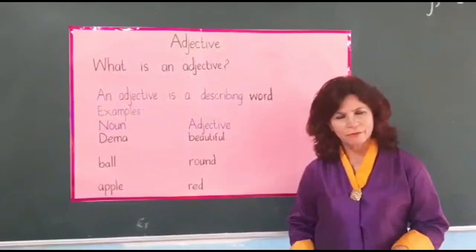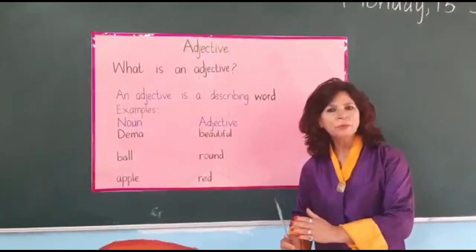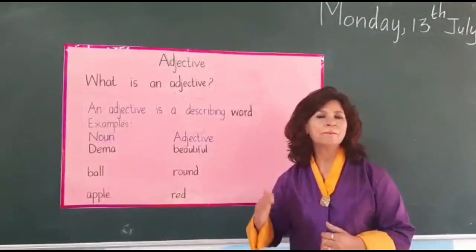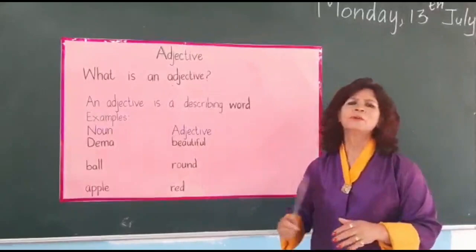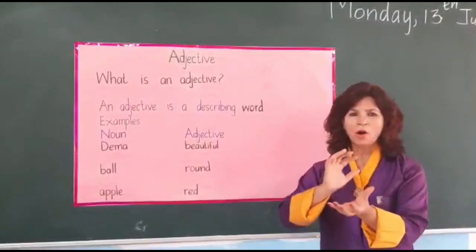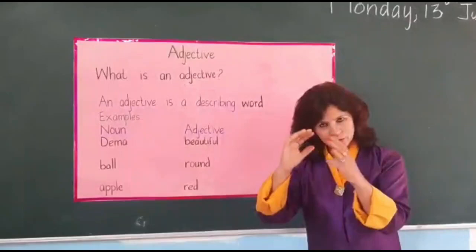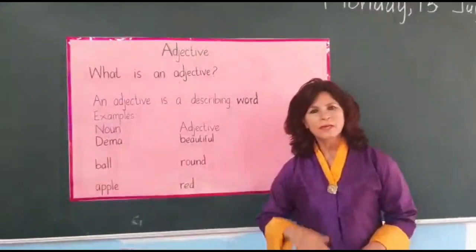Now let me make a sentence: Dema is a beautiful girl. Did you get it? Dema is a noun and we are describing the noun here. Beautiful is an adjective. Let me give another example now. Ball. Do you know what a ball is? And the adjective for ball is round. So, the ball is round.